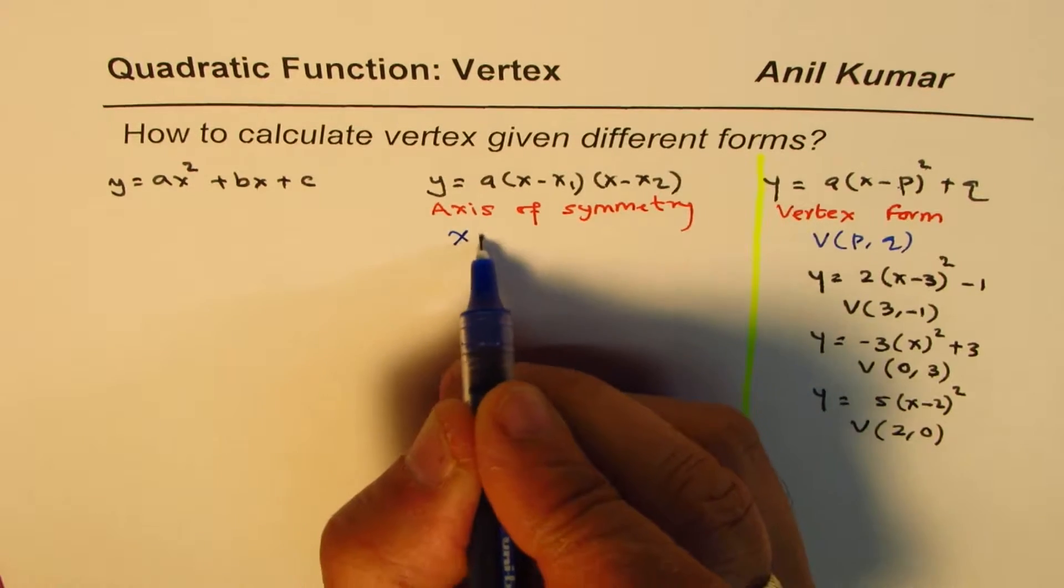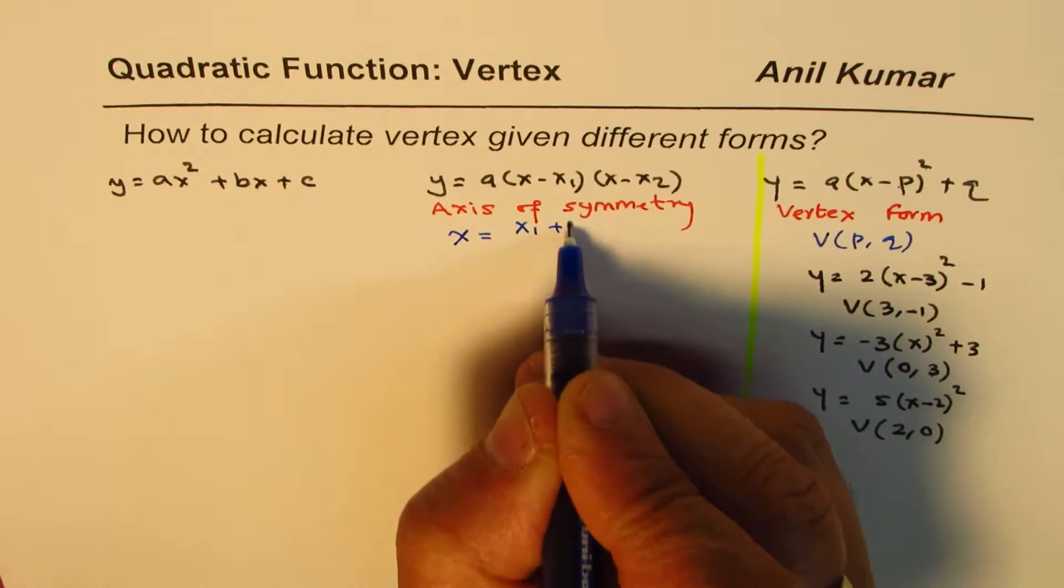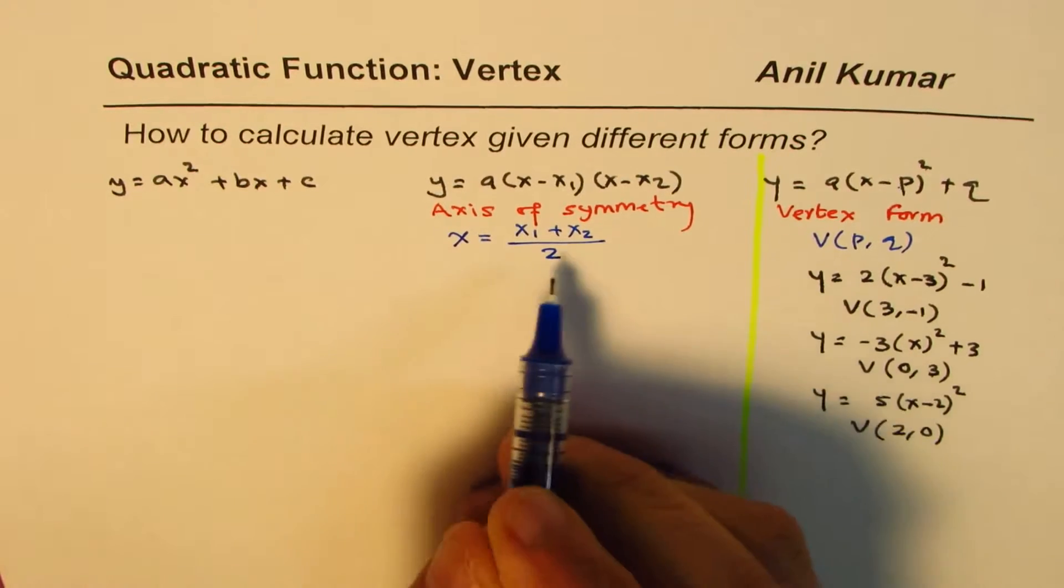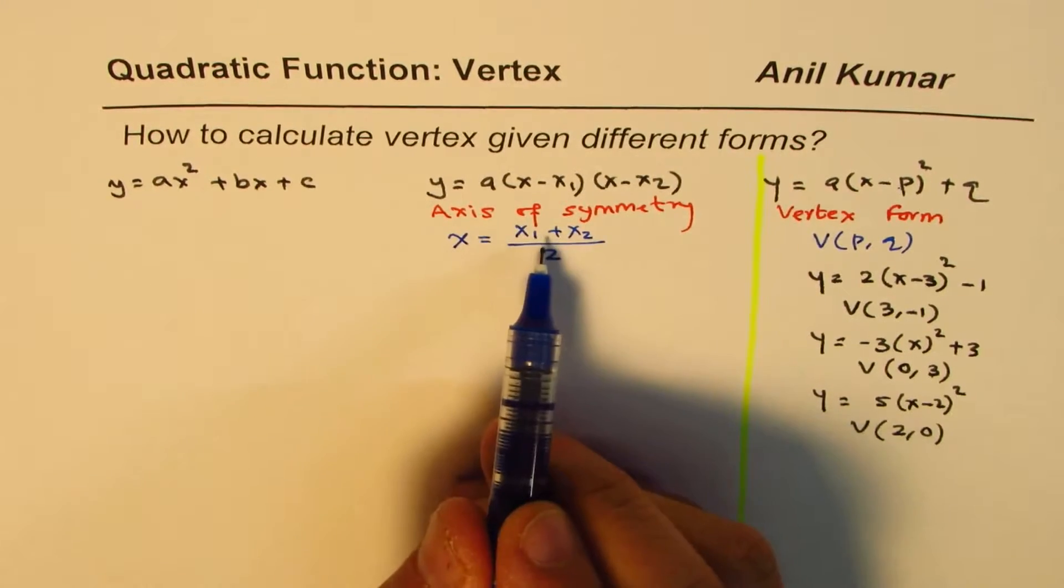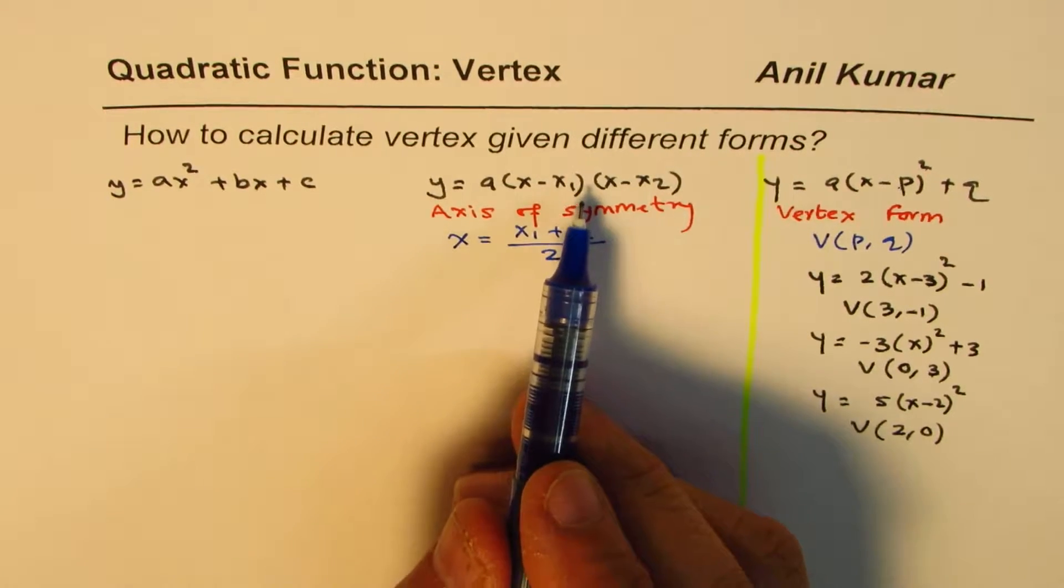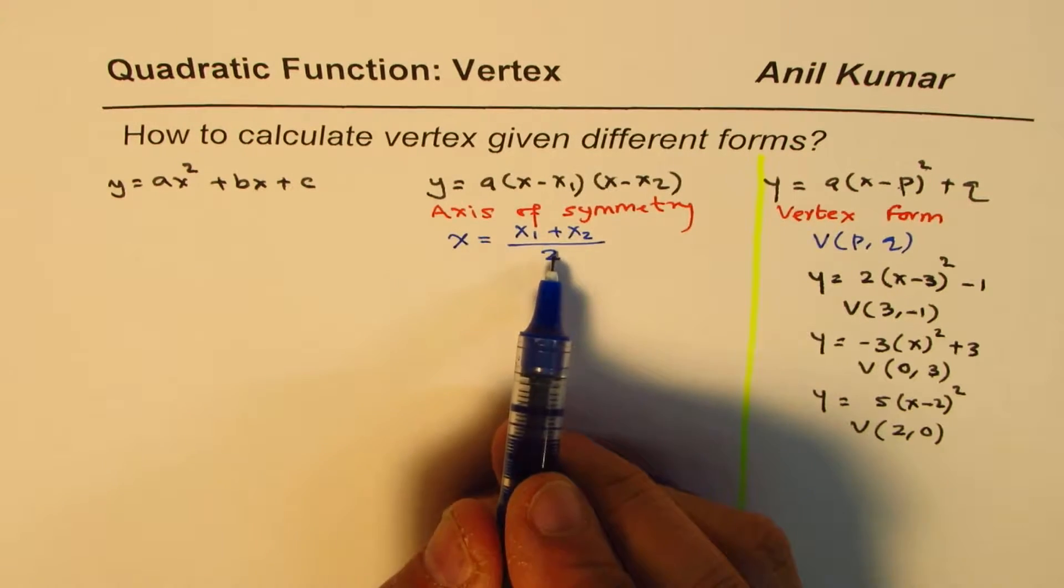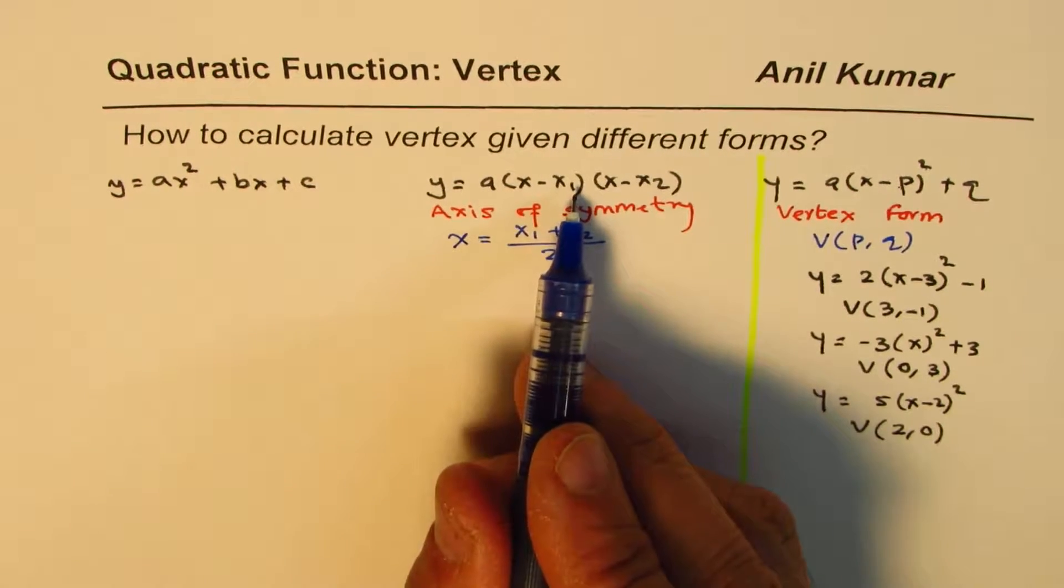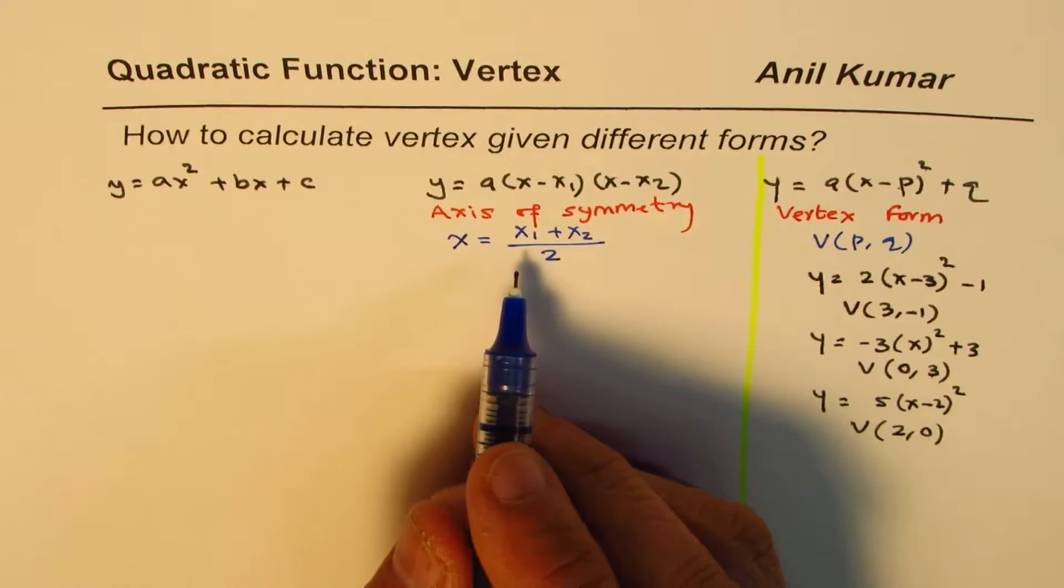So axis of symmetry is right in the center. So the x value is x1 plus x2 divided by 2. So the x value is actually on this. So here we have to do it in two steps. First find the x value and then substitute and get your answer.